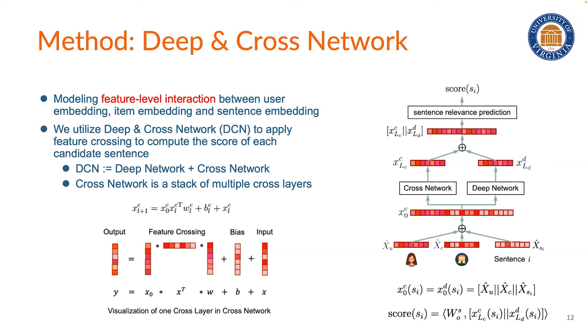If you are not familiar with DCN, it is a combination of deep network and cross-network, where the deep network can be a very simple multi-layer perceptron, and the cross-network is a stack of multiple cross-layers.